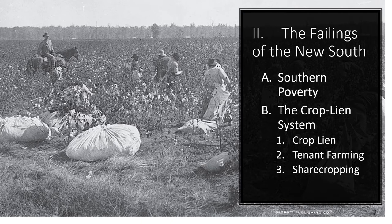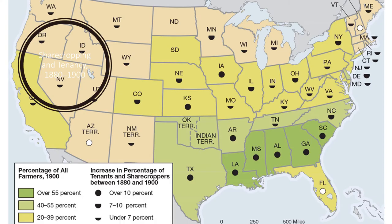Landlords typically owned stores where tenant farmers had to shop. The landowner dictated the crop and provided the sharecropper with a place to live and tools in return for a share of the harvested crop — hence, sharecroppers were perpetually in debt. In share tenancy, the farmworker chose the crop he would plant, brought his own supplies, and then gave a share to the landowner. A map shows sharecropping and tenancy between 1880 and 1900, indicating the percentage of farms not owned by the farmers who worked them.